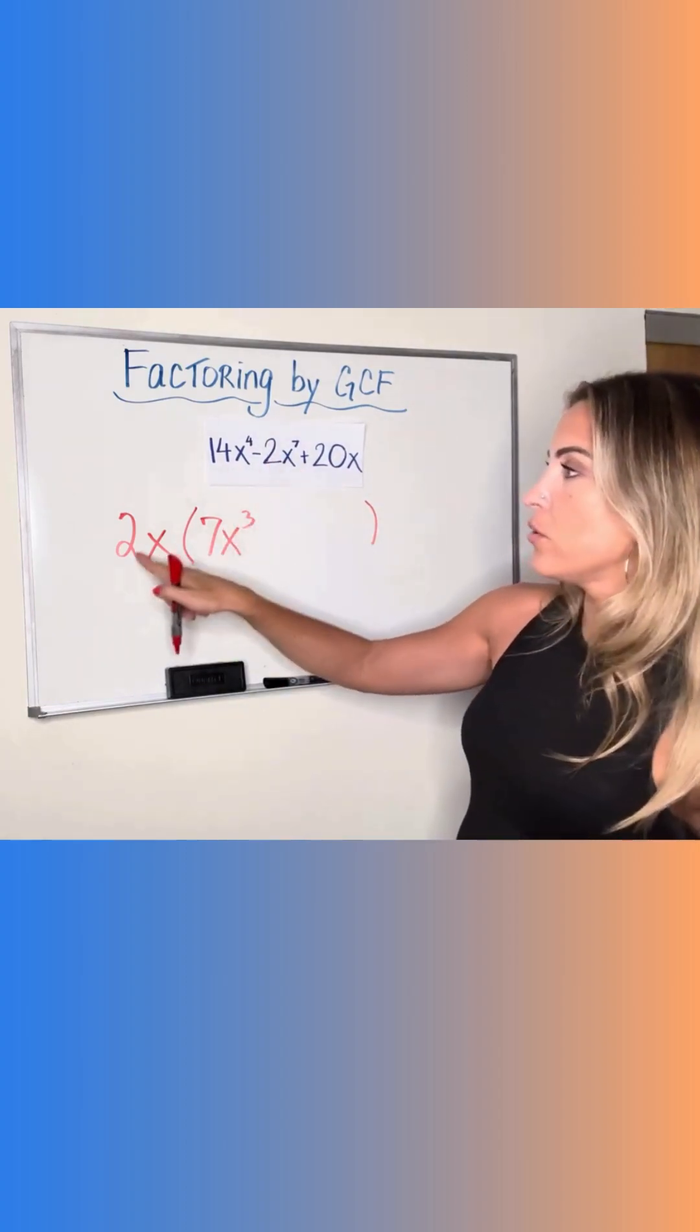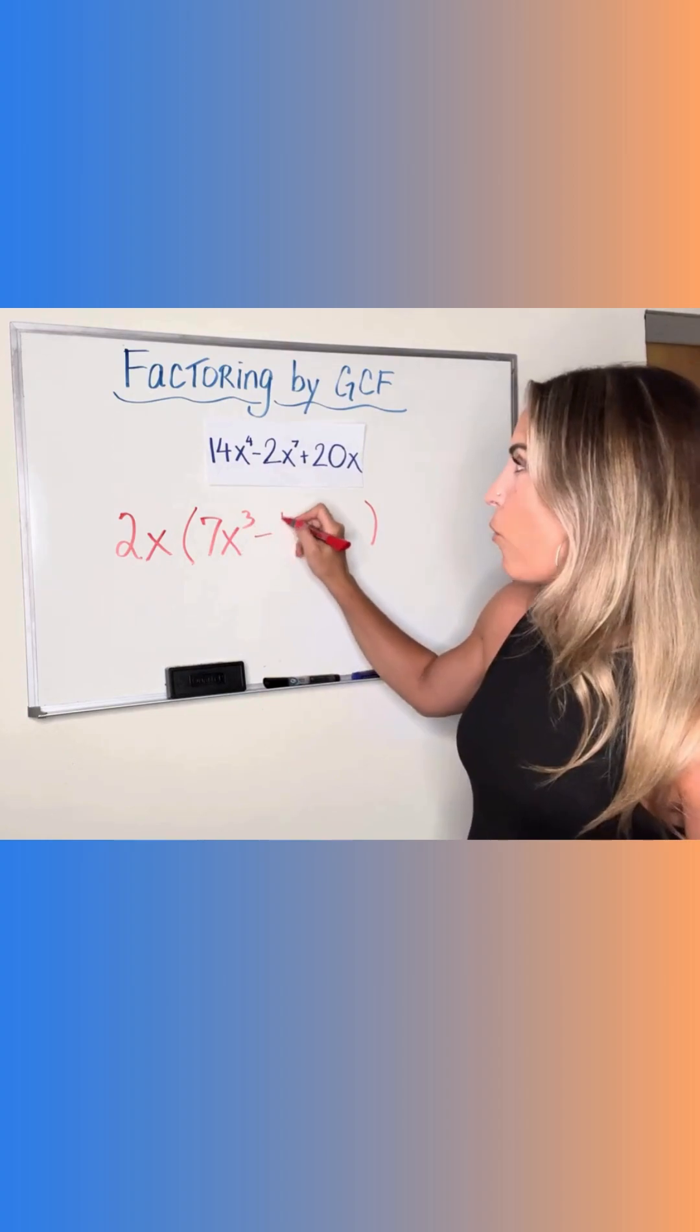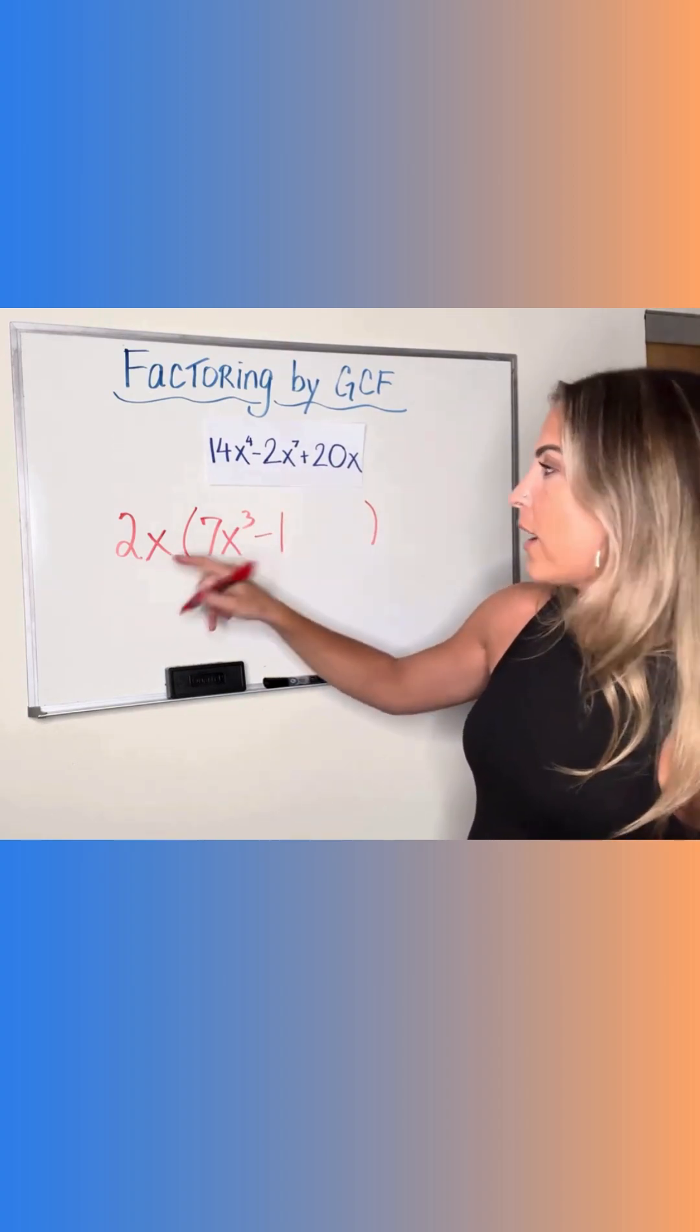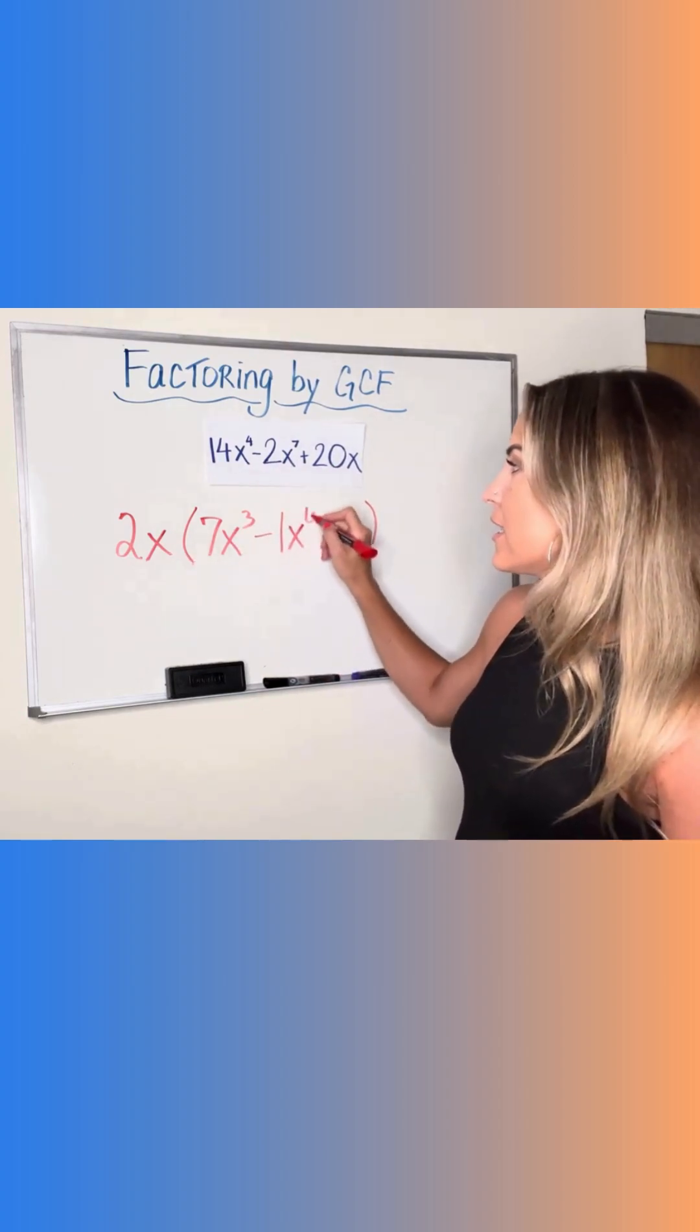Next one, negative 2 divided by positive 2 is negative 1. x to the seventh divided by x is x to the sixth.